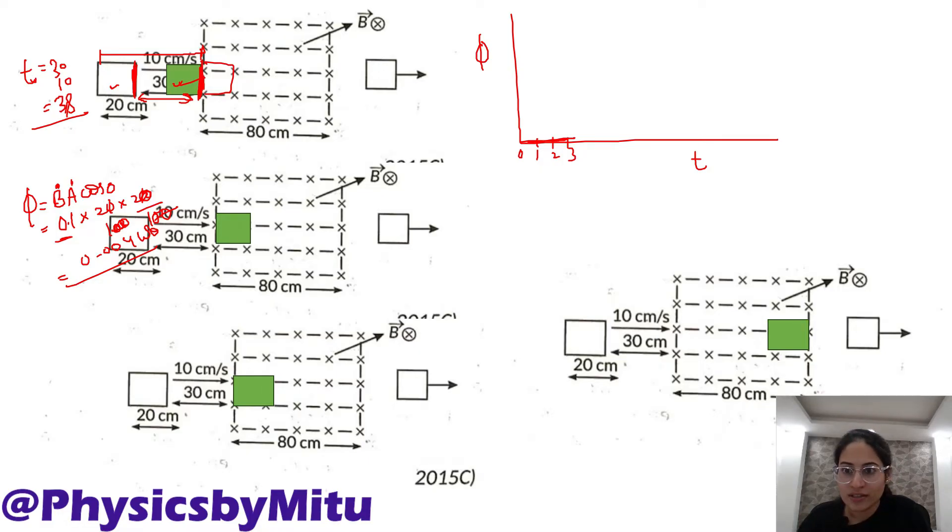Ab ye flux kitne time ke liye rahega? This side covers how much distance to reach this side? 20 cm covered, speed 10 cm per second. Time lagega distance upon speed which is 2 seconds. So it takes 2 seconds to increase the flux from 0 to 0.004 Weber. 3 to 5 seconds, flux will be increased to 0.004 Weber.